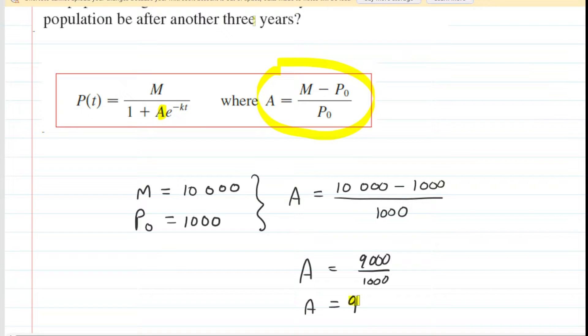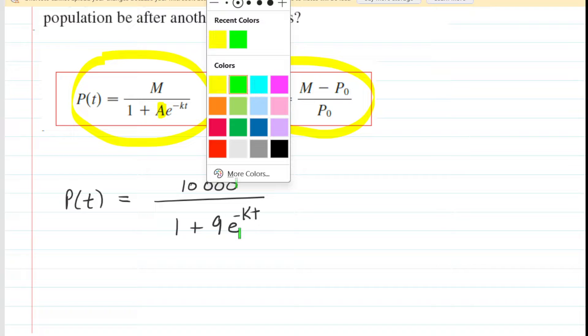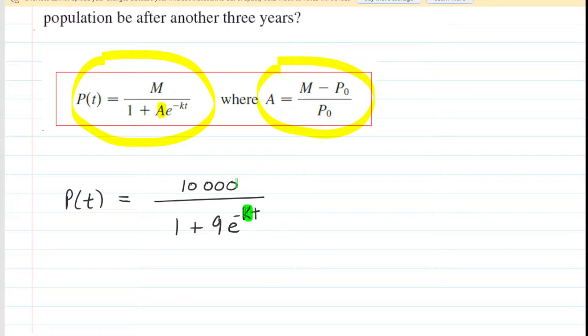So once we have this value of A, we can actually go back and plug it into the logistic equation given right here. So let's go ahead and do that. We've also gone ahead and plugged in 10,000 for M as well. So this is our logistic model, but our next task becomes solving for the value of K.